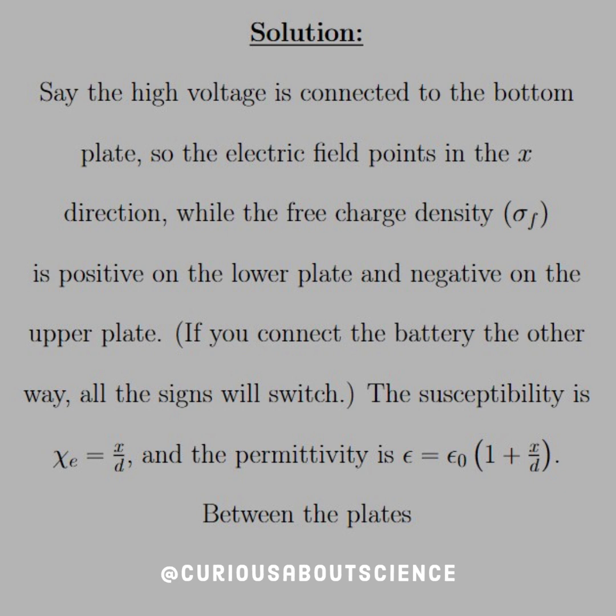The susceptibility is chi e equal x over d. Remember, it changes linearly. In the permittivity, epsilon is equal to epsilon naught times one plus x over d, which is how we get two at the top and one at the bottom.